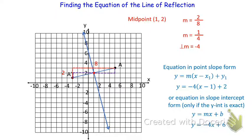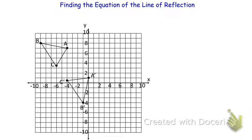Now let's look at a couple more examples. Here we have triangle ABC that's been reflected across a line to form triangle A'B'C'. Let's start by connecting the corresponding points: A to A', B to B', and C to C'. Notice that C and C' are not clean integer coordinates, so we probably don't want to use those. Points A and B have nice, clean coordinates, so we can use either one.